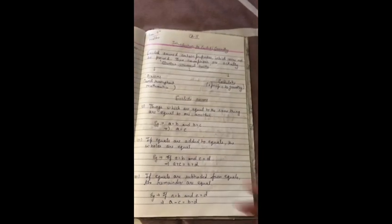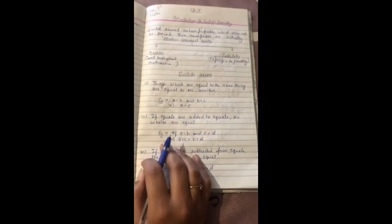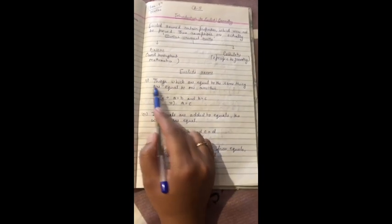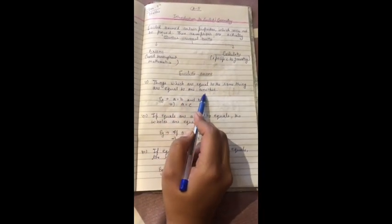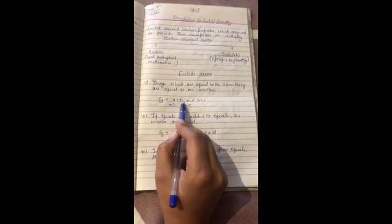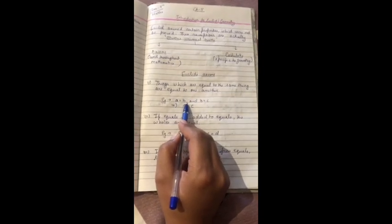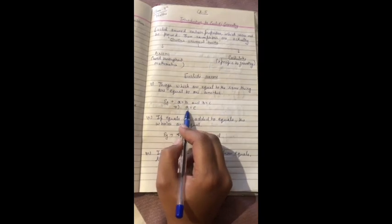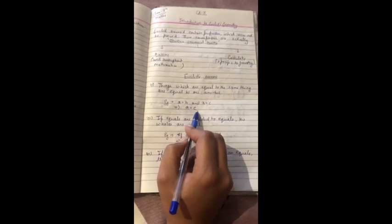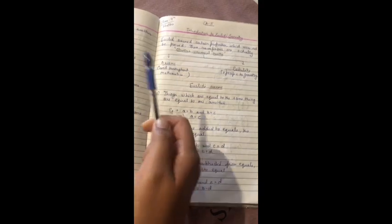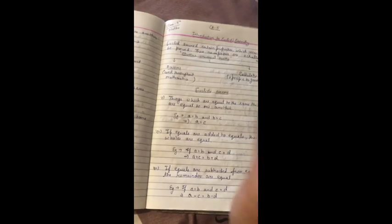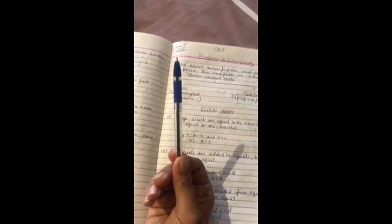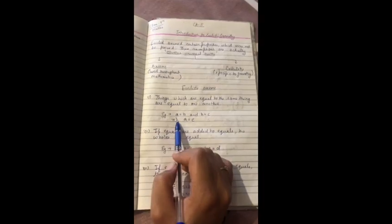Now let's talk about some axioms. You need to remember and learn them. First: things which are equal to the same thing are equal to one another. That means if A is equal to B and B is equal to C, so that means A is equal to C. The cost of this pen is equal to the cost of another pen, and the cost of that pen is equal to the cost of a third pen. So the cost of the first pen is equal to the cost of the third pen. That is the first axiom.